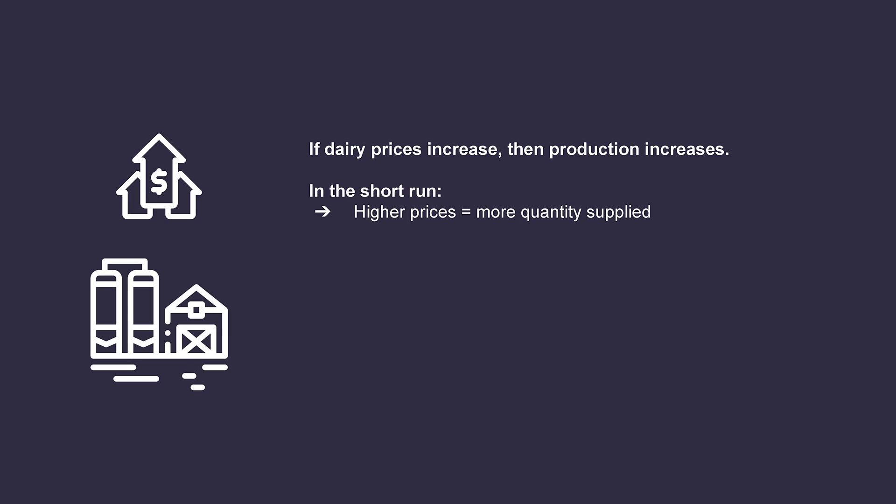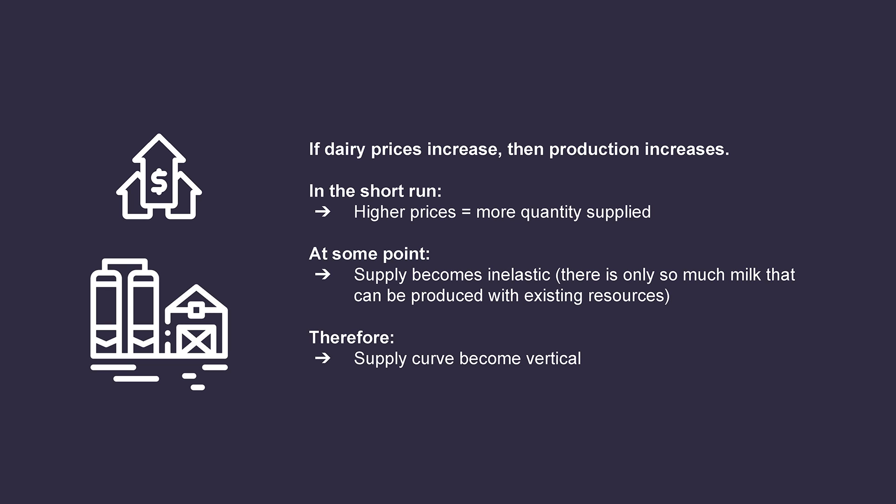But at some point, the farmer will hit a resource constraint. There is only so much milk they can produce with their existing stock of dairy cows, their barn, their machines, and workers. This is when their supply becomes inelastic. That is, supply does not respond to price changes, and the supply curve becomes vertical at this point. At the aggregate level, the same principle applies.